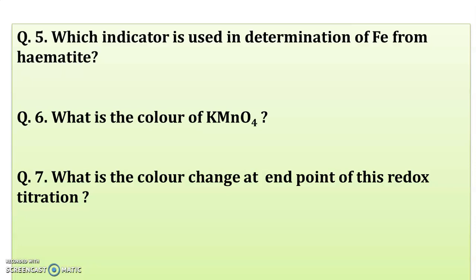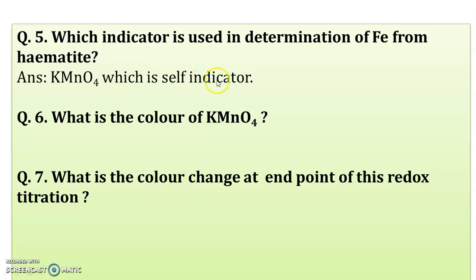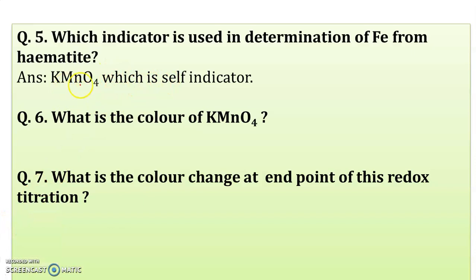Which indicator is used in the determination of Fe from the hematite? In experiment number 1, potassium permanganate (KMnO₄) which is filled in the burette itself acts as the indicator — it is a self-indicator whose color is pink. No need to add any external indicator because potassium permanganate is a self-indicator.